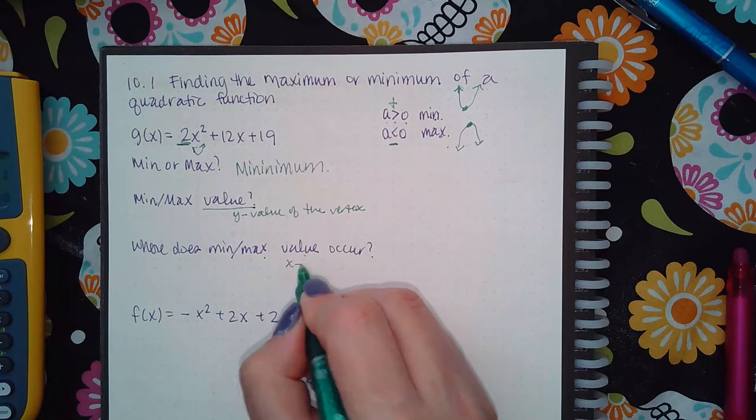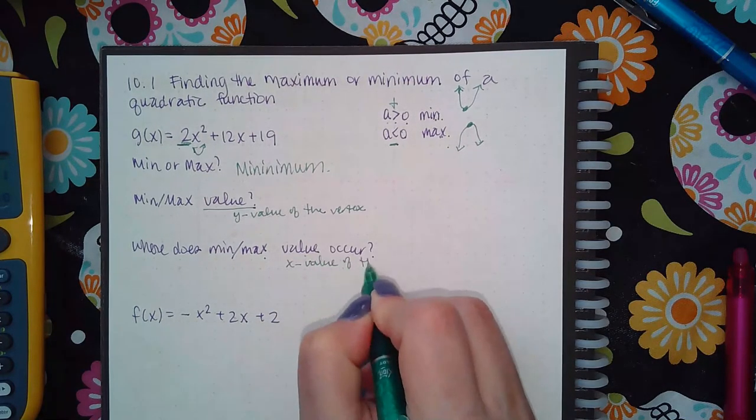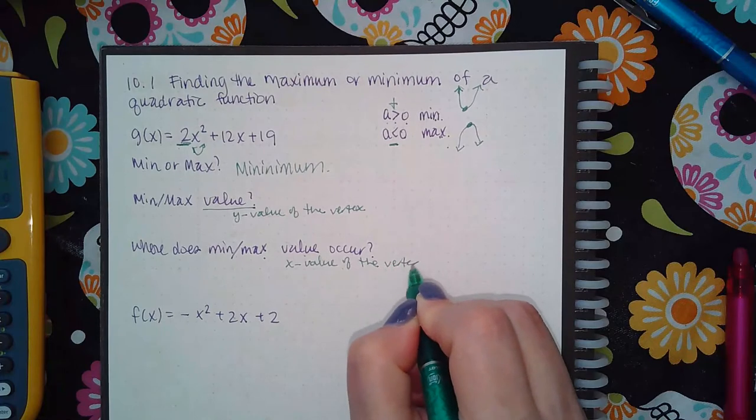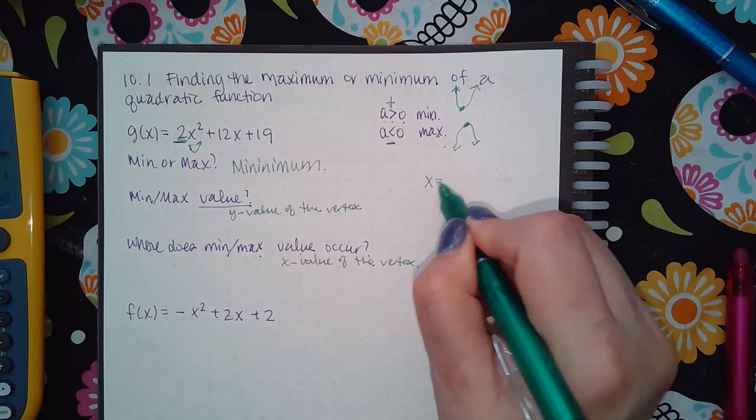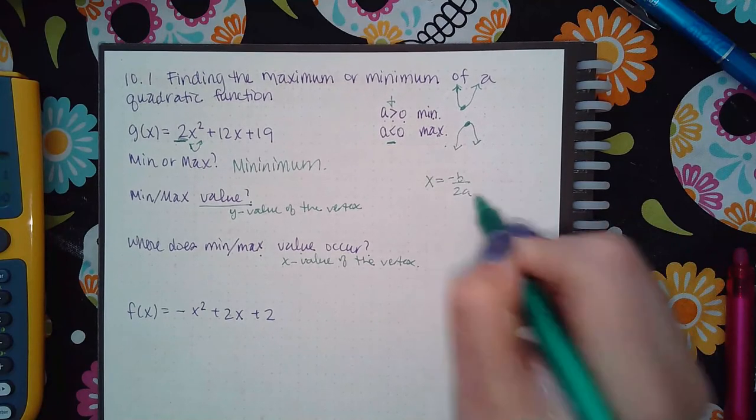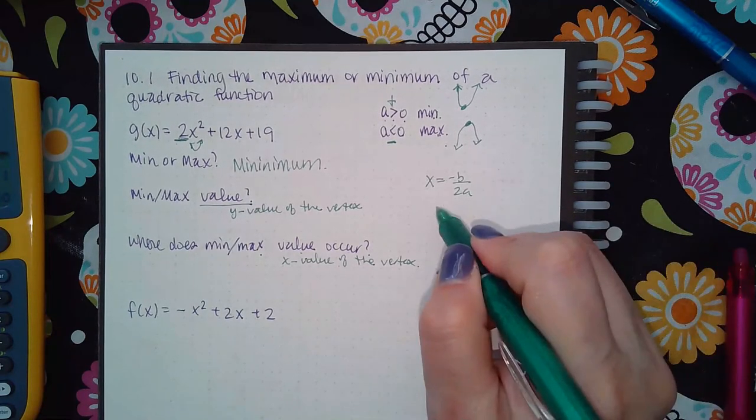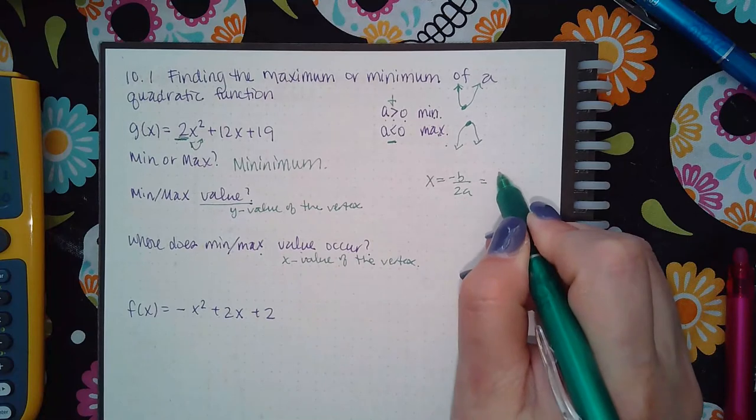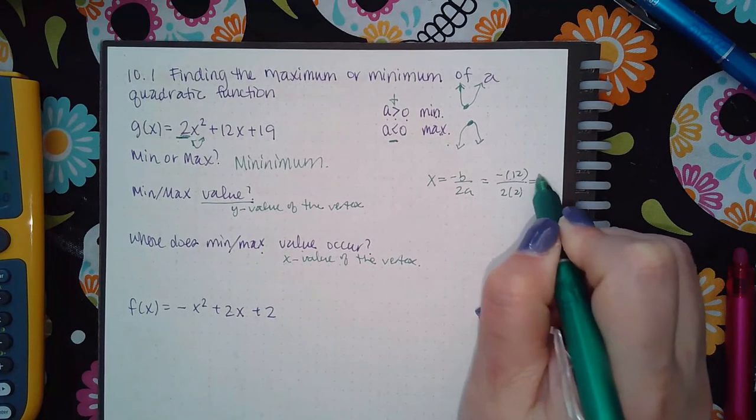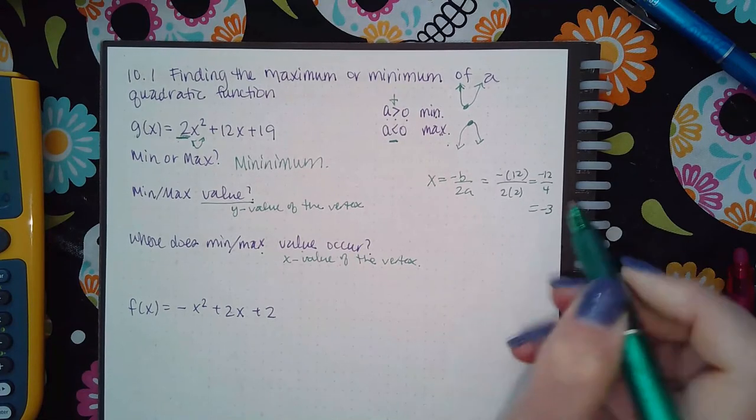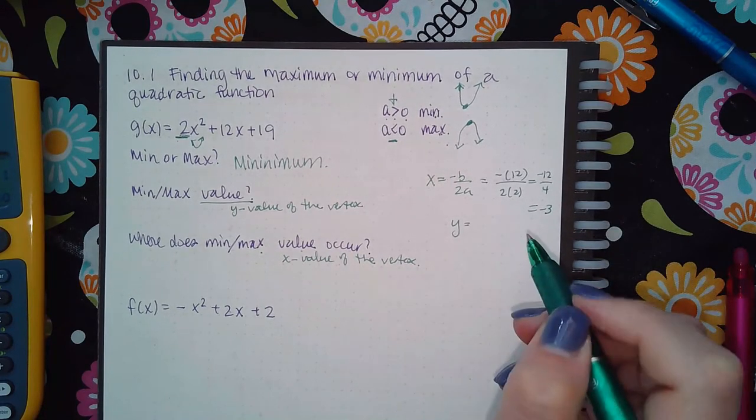When it says where does the minimum or maximum value occur, that is the x value of the vertex. So how do I find the vertex? I start with x equal to negative b over 2a. When I do that, I have b is a positive 12 and a is a 2, so negative 12 over 4, which is negative 3.